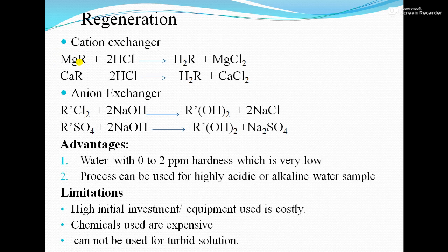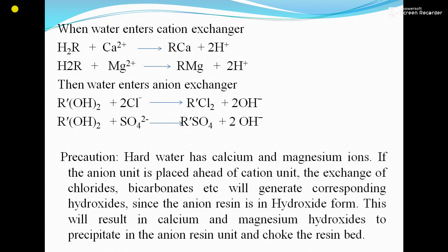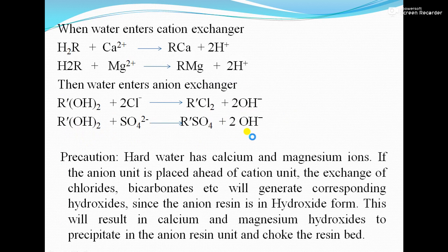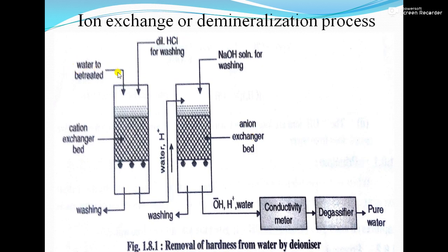For regeneration, after the cation exchanger bed and the anion bed are exhausted, they can be regenerated by dilute HCl and dilute NaOH. MgR on reaction with HCl produces H₂R and magnesium chloride. Similarly, CaR produces H₂R and calcium chloride. RCl₂ on reaction with NaOH gives R(OH)₂ and NaCl. Similarly, R(SO₄) gives R(OH)₂ and sodium sulfate. The diagram shows the softening process and regeneration using dilute HCl with washing, and dilute NaOH with washing.